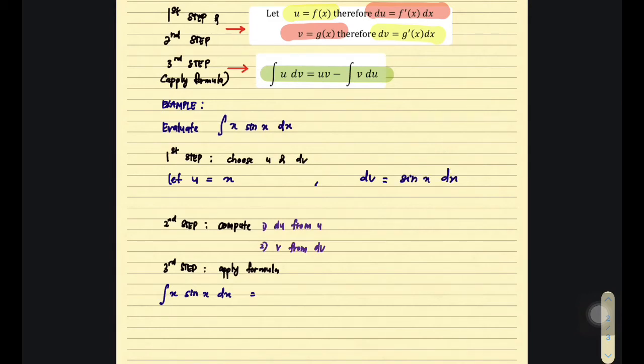Now the second step, you need to find out du and also v. So how to get du? By differentiate your u. So your du is equivalent to dx. Then we need to find out our v. How to get v? By integrate our function here. Your v is actually equivalent to integrate your dv. So it is equivalent to the integral of sin(x) dx. Then you will get negative cos(x).